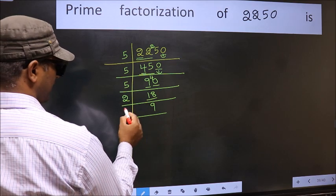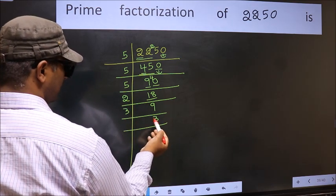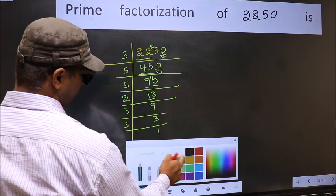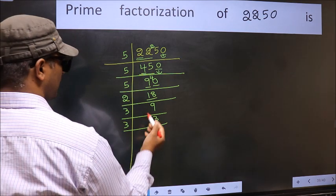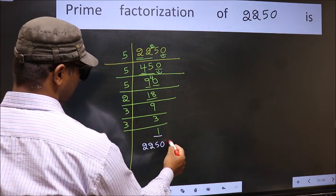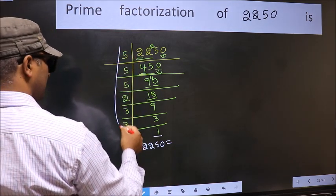Now we have 9. 9 is 3 threes is 9. Now we have 3, 3 is a prime number, so 3 ones is 3. So we got 1 here.